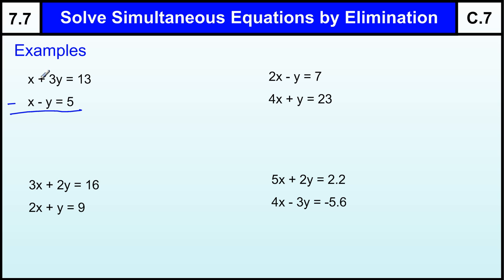3Y minus minus Y. You have to be very careful with your negatives in these sort of things. 3Y minus minus Y, which is plus Y, makes 4Y. And 13 take away 5 is 8. So we can work out that Y equals 2.